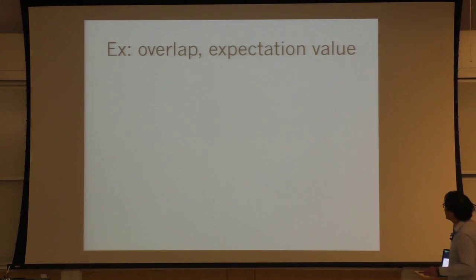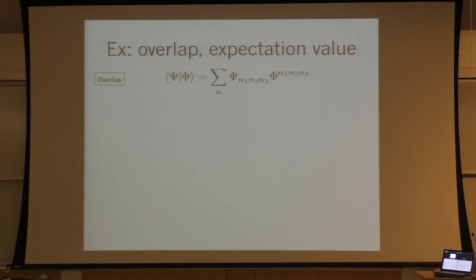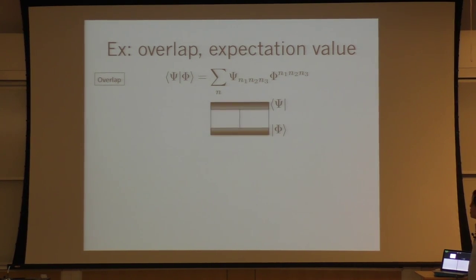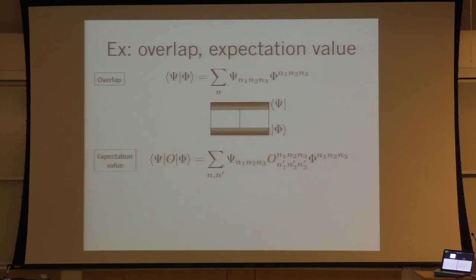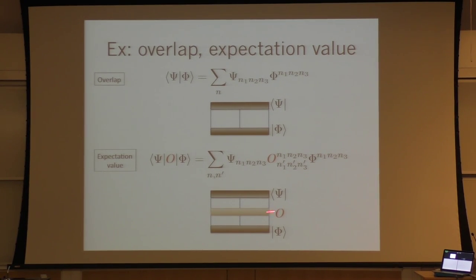Let's look at some computations — by which I mean reducing something to a scalar. The overlap between two states is just the sum of amplitudes of one state dotted with the amplitudes of the other. In picture form: this is the bra tensor, this is the ket tensor, and I've connected their physical indices — meaning I'm summing over N1, N2, N3. For an expectation value, you sandwich the operator in the middle — the meat in the middle.